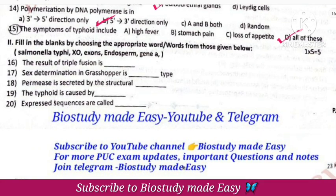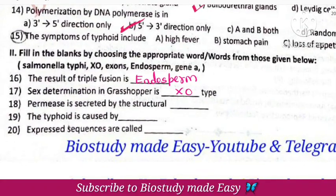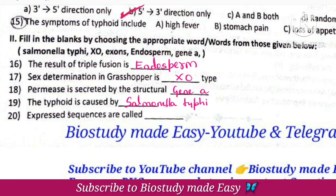Fill in the blanks: The result of triple fusion is endosperm. Sex determination in grasshopper is XO type. Permease is secreted by structural gene A. Typhoid is caused by Salmonella typhi. Expressed sequences are called exons.